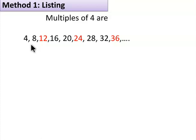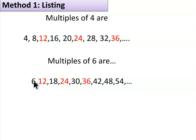Let us discuss method 1: listing. Multiples of 4 are 4, 8, 12, 16, 20, 24, 28, 32, 36, and so on.